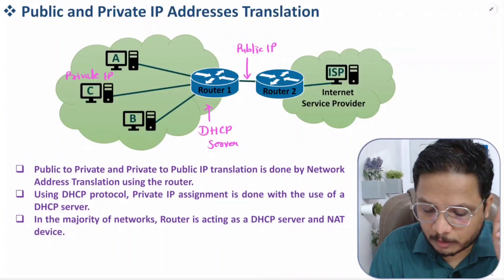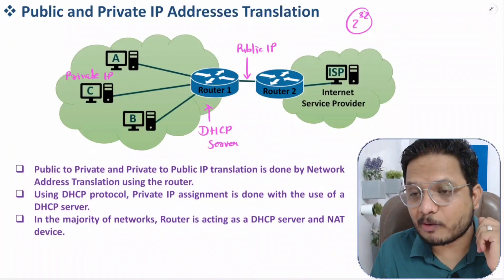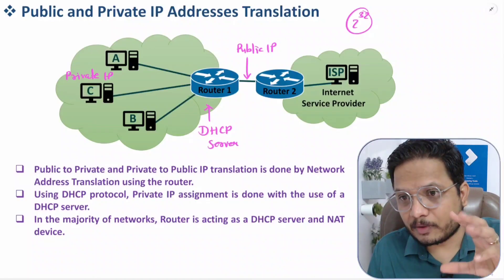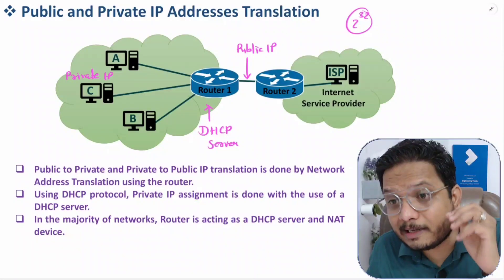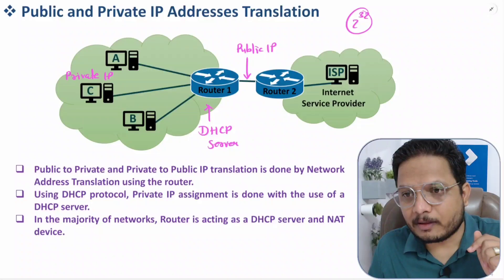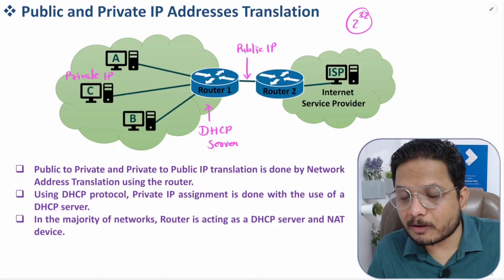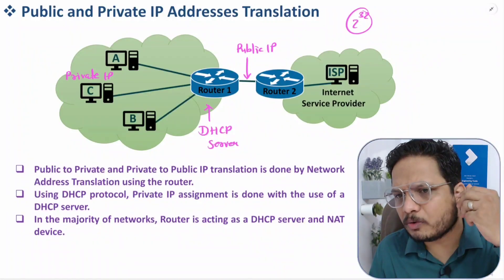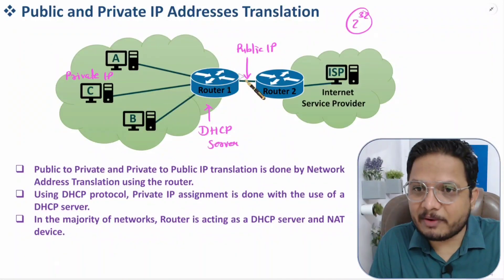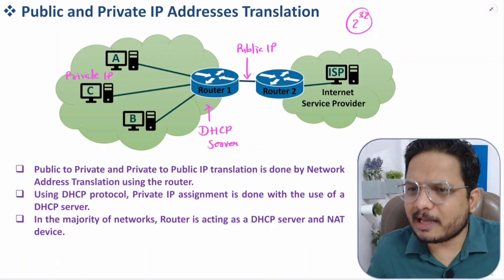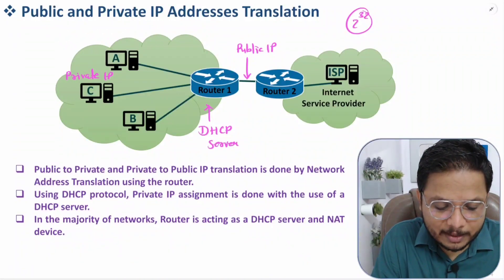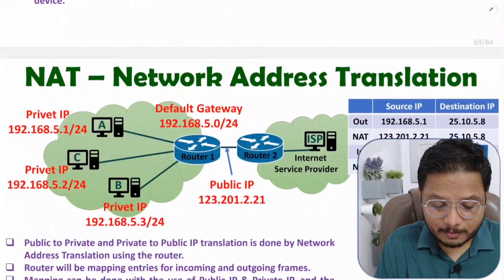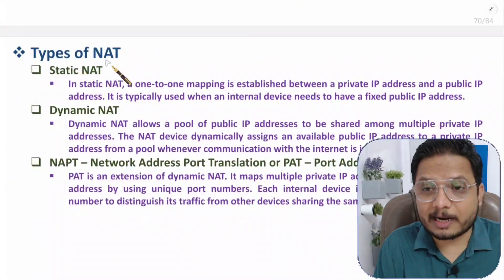There are only 2 to the power 32 IPv4 addresses available — that's about 4 billion. But right now, more than 30 billion devices are accessing the internet using IPv4. So it is not possible to assign a single unique IP to every device. This is why the concept of public and private IP exists — everyone communicates using a shared public IP through their router. This address translation at the router is called Network Address Translation, or NAT. In my next video, I'll explain exactly how NAT works and the types of NAT available.